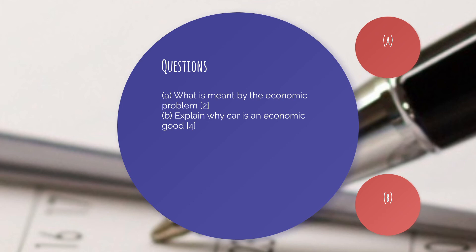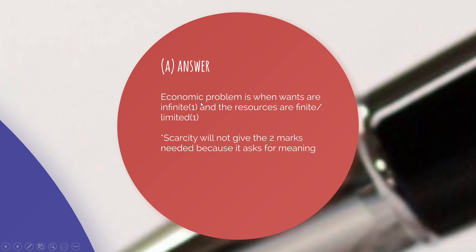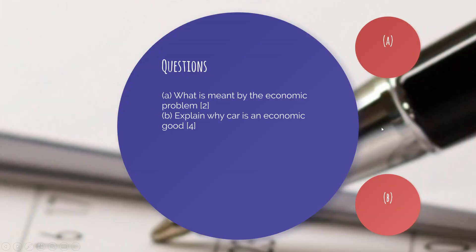If you need more time you can pause the video and write down the answer. Now let's check the answer for Part A: the economic problem is when wants are infinite and resources are finite or limited — one mark for infinite wants and one mark for limited or finite resources. If you write only 'scarcity' it won't give you two marks because a meaning is being asked for, not just the term.